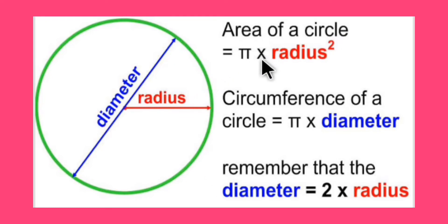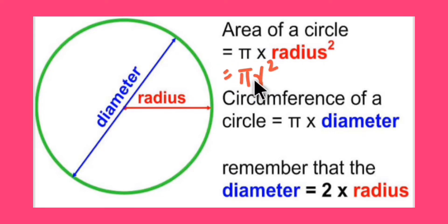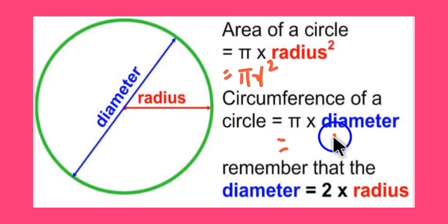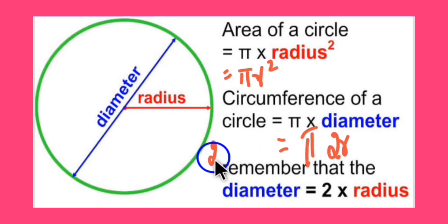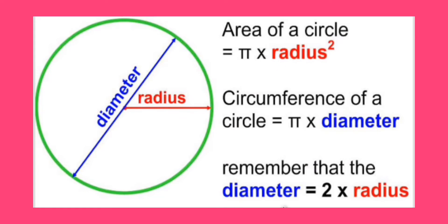We know the basic formula: area of a circle is π r². For circumference, the formula is π into diameter, that is π × d. Since diameter is twice the radius, we can also write it as 2πr. This is the formula for circumference of the circle. Remember that diameter is equal to twice of the radius.